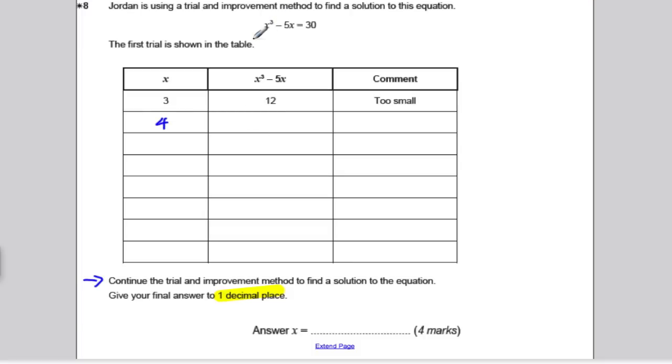So, I'm working out 4 cubed minus 5 times 4 on my calculator. And I'm getting 44 when I do that, which is too high. So, I'm going to go high. Now, I found consecutive numbers, one too small, one too high. So, I'm going to go somewhere in between. It looks like it might be slightly closer to 4, but I'm not sure. Let's just try 3.6. Let's see if that's any good to us. So, we work out 3.6 cubed minus 5 times 3.6. And we get 28.7, which is small.